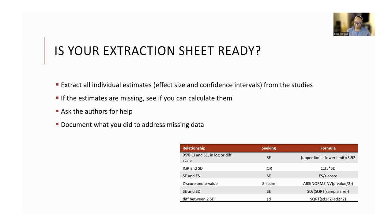In a perfect world, the papers will present all the data that you need exactly the way you want them, but that doesn't always happen. Sometimes you have to calculate the estimates that you need. This table shows you how you can go from one statistical estimate to another. For instance, if you wanted to include the standard error of an estimate in your data but the authors did not present this, you can get the standard error from the 95% confidence interval by subtracting the lower limit from the upper limit and then dividing that by 3.92.